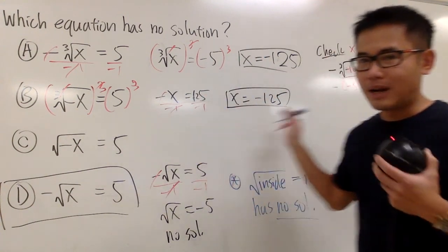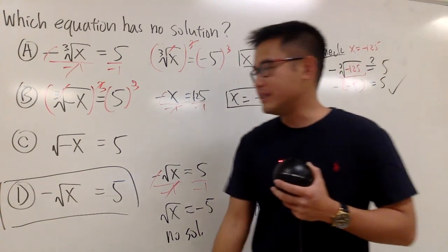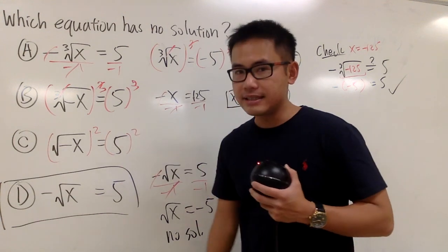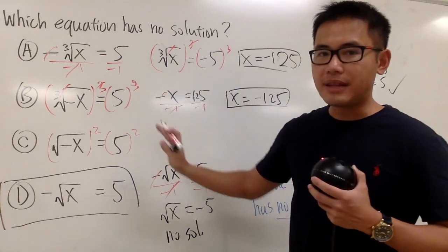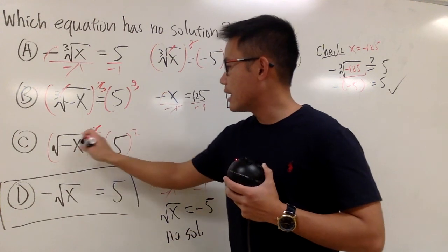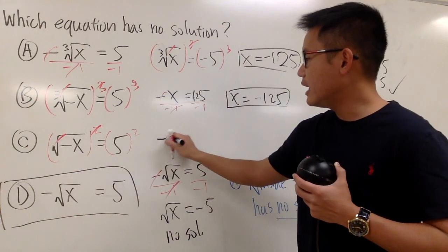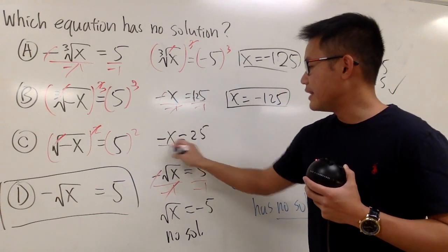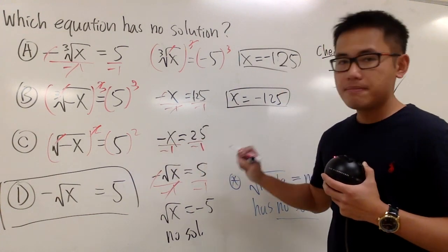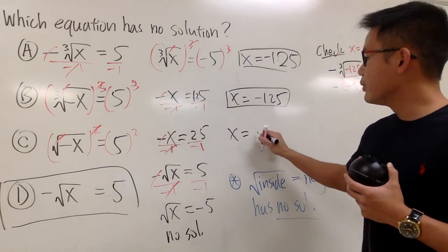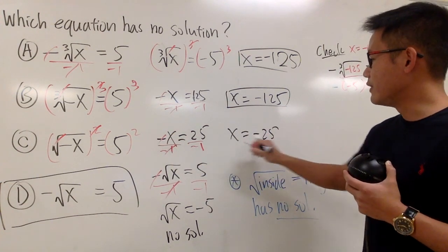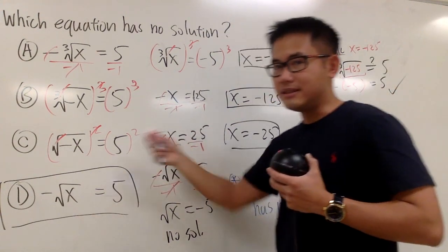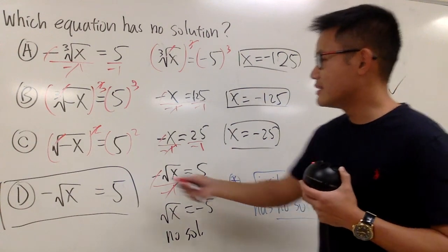This will also work, but I'll leave the check for you. Lastly, for the square root equation, we have to square both sides — earlier it was cube both sides, but now we square both sides. Cancel this out, you get negative x equals 5 squared, which is 25, then divide by negative 1, and we have x equals negative 25. This is in fact the only answer.